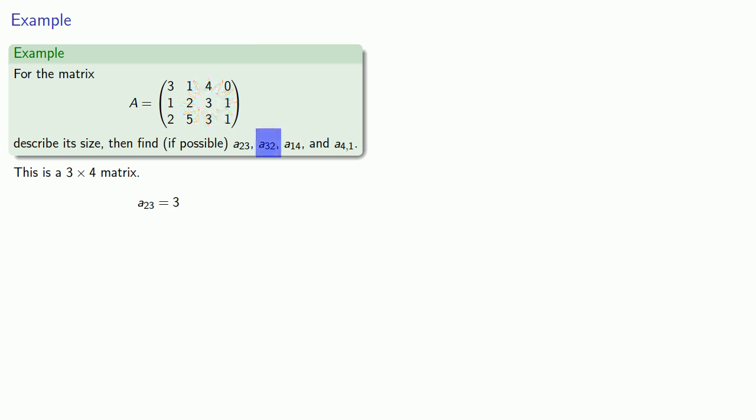A32 is the entry in the 3rd row, 2nd column, which is 5. And A14 is the entry in the 4th column, and A41 is in the 4th row, wait a minute, there is no 4th row, so A41 does not exist.